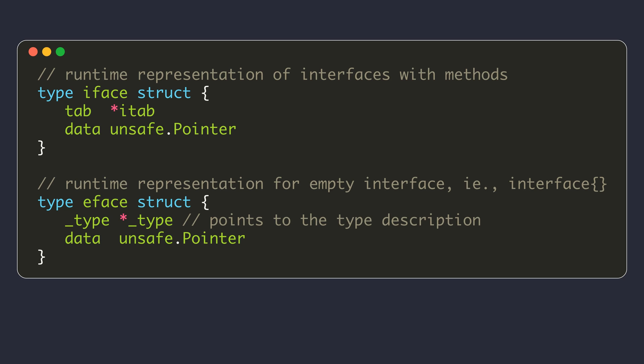If the interface involved is an empty interface, it has no methods, so there is no need for an interface table. Instead of storing a pointer to the interface table, the runtime representation stores a pointer to the type descriptor of the concrete type that exists in the global map. Go defines a separate struct named eFace for representing the empty interface.